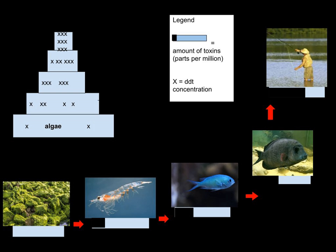Biomagnification, also known as bioamplification or biological magnification, is the increasing concentration of a substance, such as a toxic chemical, in the tissues of tolerant organisms at successively higher levels in a food chain.